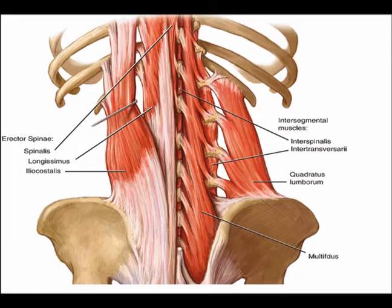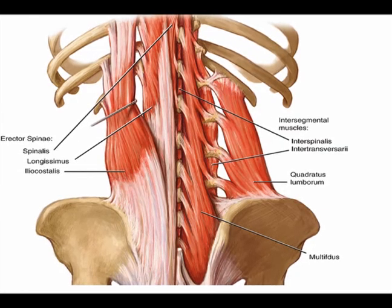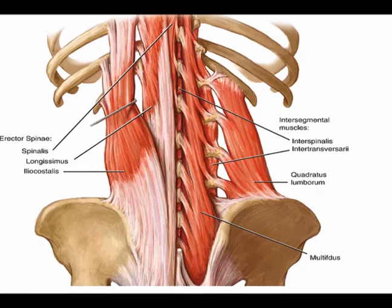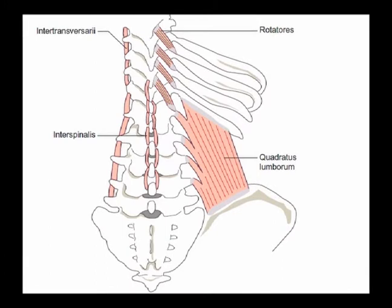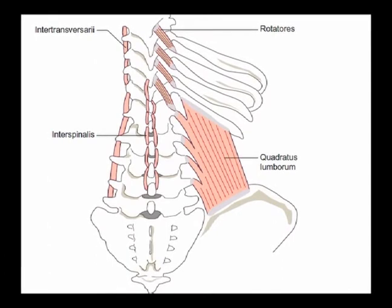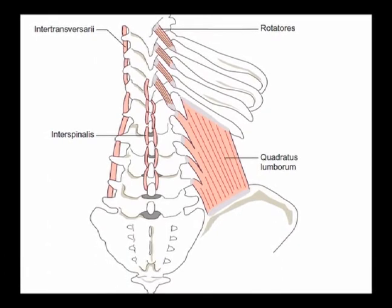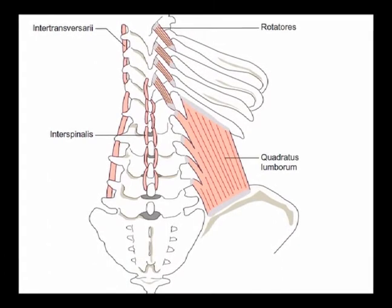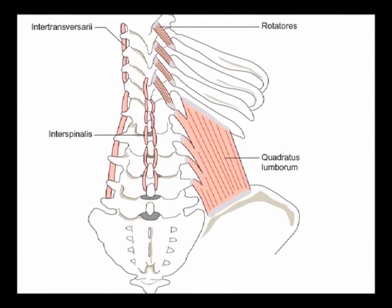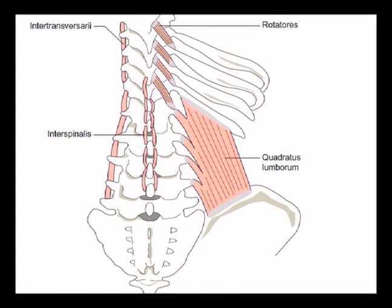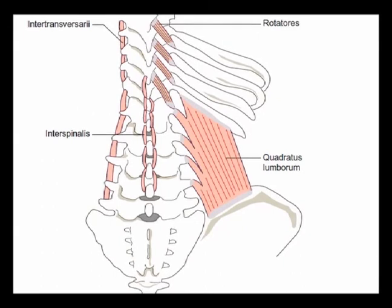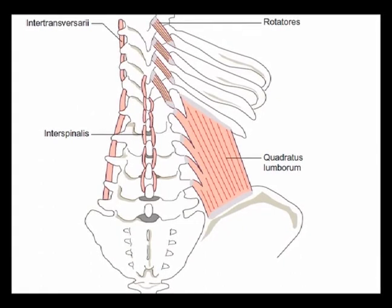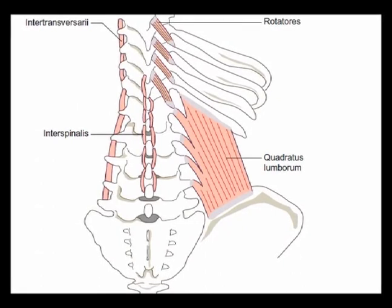The interspinalis attach between the spinous processes of the vertebrae. The origin is a spinous process, and the insertion is a superior spinous process. The innervation is the posterior rami of the spinal nerves, and the action is extension of the spine.